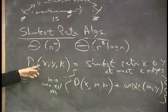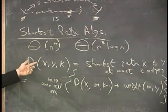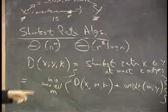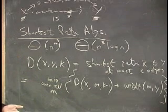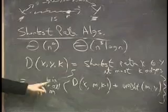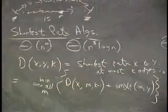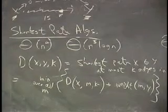When M equals Y, we consider D(x, Y) plus W(Y, Y) — zero — which is the old value, ensuring we never replace a good answer with a worse one. When M are nodes not adjacent to Y, W(M, Y) is infinity, so they naturally don't improve anything. You might think to only loop over M adjacent to Y, but since we're using a 2D array, finding adjacent nodes requires scanning the entire row anyway, so we might as well loop through all M and let the infinities handle themselves.